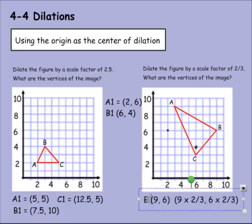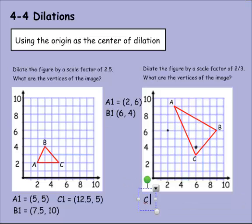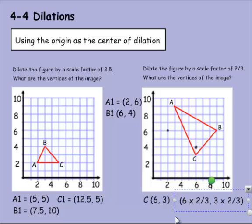Now we need to get C. C is currently at 6 and 3. Let's multiply that times the scale factor. 6 times 2 is 12, divided by 3 is 4. 3 times 2 is 6, divided by 3 is 2. So my new vertices for C1 are 4 and 2.